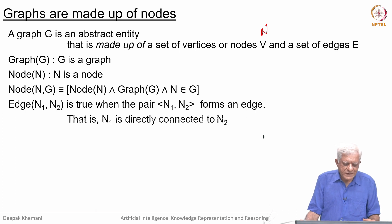We can say that edge N1, N2 is true whenever the pair N1, N2 forms an edge. That is how we define the interpretation of binary relations. What we mean by an edge is that N1 is directly connected to N2.